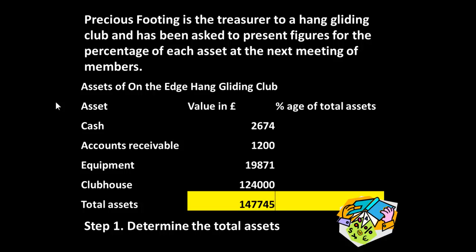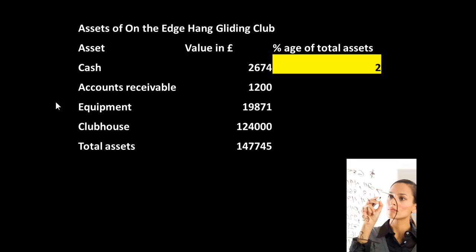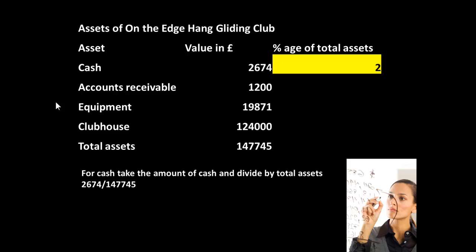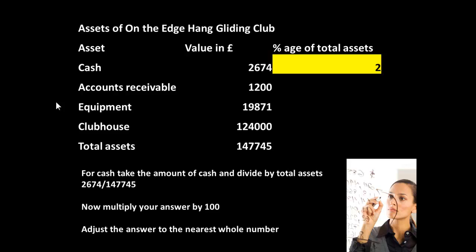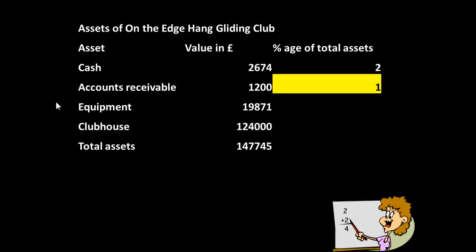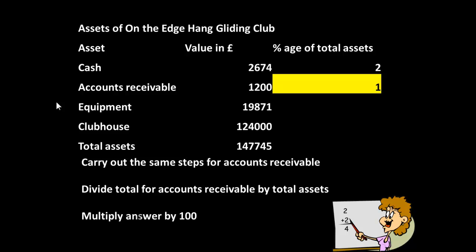Now let's carry on and do the cash part. We have cash of 2,674 out of total assets of 147,745, which comes to 2%. How did I get that? I took the amount of cash and divided by the total assets: 2,674 divided by 147,745, and then I multiplied my answer by 100. For convenience I am adjusting the answers to the nearest whole number. For accounts receivable, which work out at 1% of total assets, I did the same thing: divided the total for accounts receivable by total assets and multiplied my answer by 100, giving the answer to the nearest whole number.